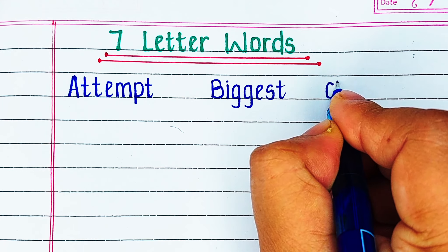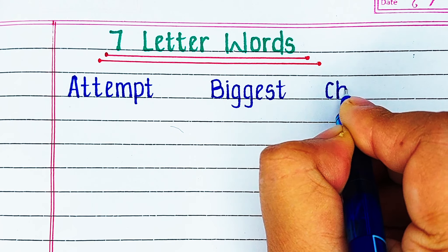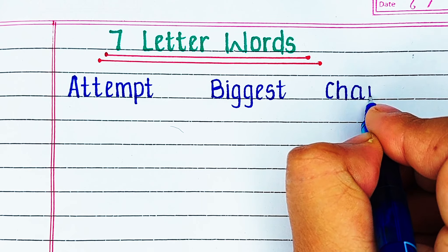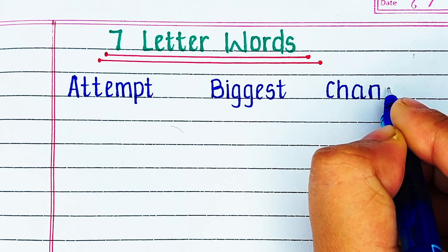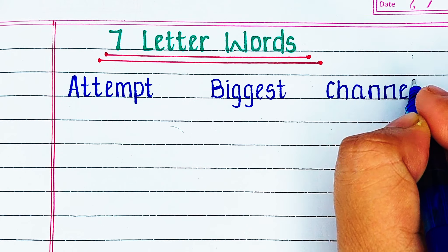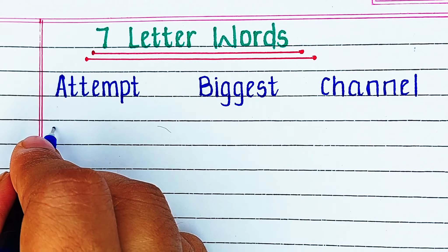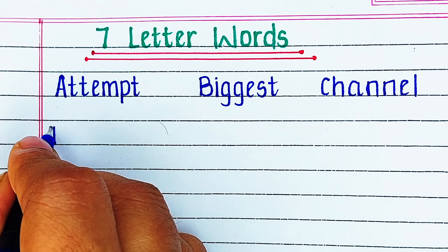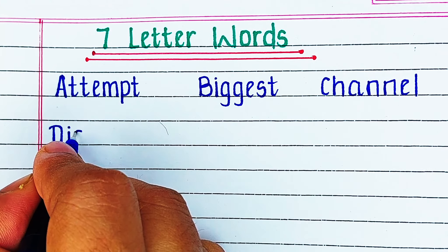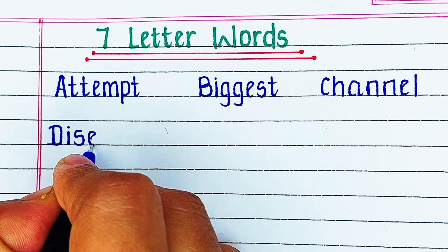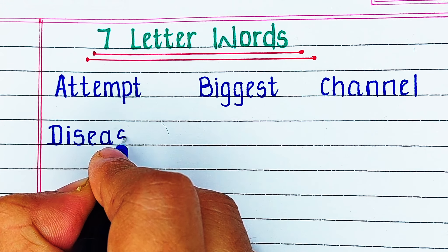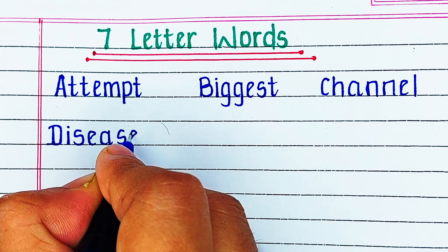Next is Alphabet C. The word is C H A N N E L, channel. Next is Alphabet D. The word is D I S E A S E, disease.